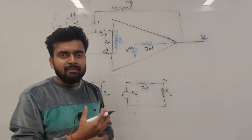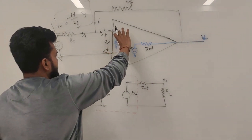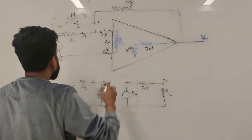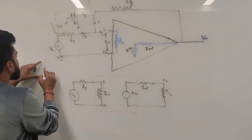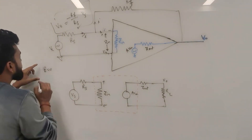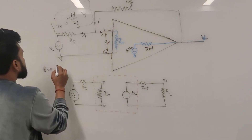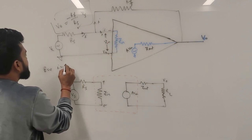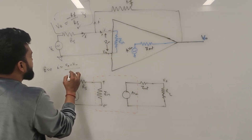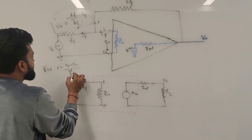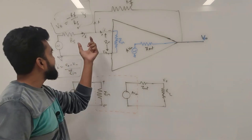So how can we make that current zero? To have that current zero passing through the input impedance Zin, if we apply Ohm's law, we can write: i equals (V+ minus V−) divided by Zin.